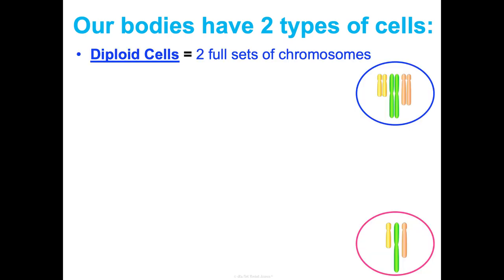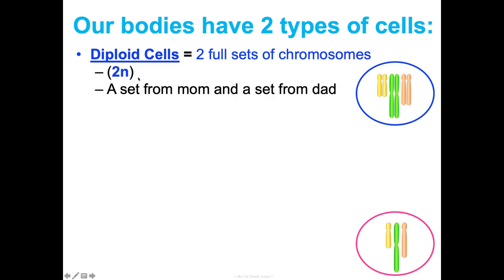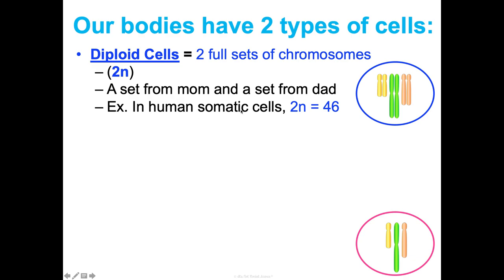Diploid cells, which are your body cells, have two full sets of chromosomes, so we say they are 2N. One of those sets came from mom — from your biological mother, in her egg — and one of those sets came from your biological father, in his sperm. So in human somatic cells, the diploid number 2N is 46: 23 from mom and 23 from dad. That's what makes up the diploid number.